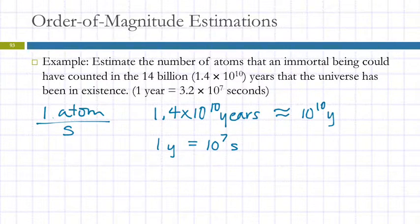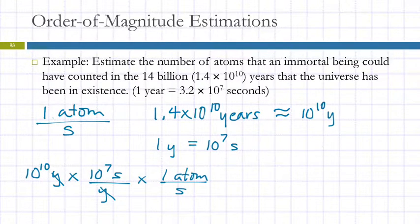So then what I'm going to do in my head is I'm going to say, well, 10 to the 10th years, and I've got 10 to the 7th seconds per year, and then I can count one atom per second. Okay, 10 to the 10th times 10 to the 7th. When you multiply exponential numbers, you add the exponents. And so that is 10 to the 17th atoms. If you counted one atom per second, in the entire 14 billion years that we think the universe has existed, you could count 10 to the 17th atoms.